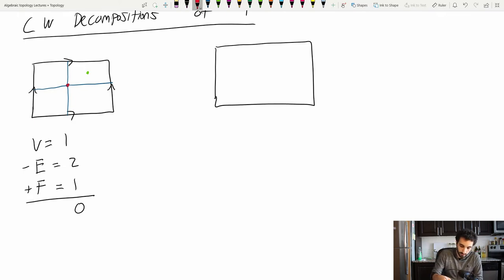But let's just make sure we're not getting into trouble here. Let me try another decomposition of the torus. Maybe one a little more intricate. So let's start with what we had before. And now how about we just put a little square inside of here. So let's count everything up. Vertices. I have four vertices, plain as day.